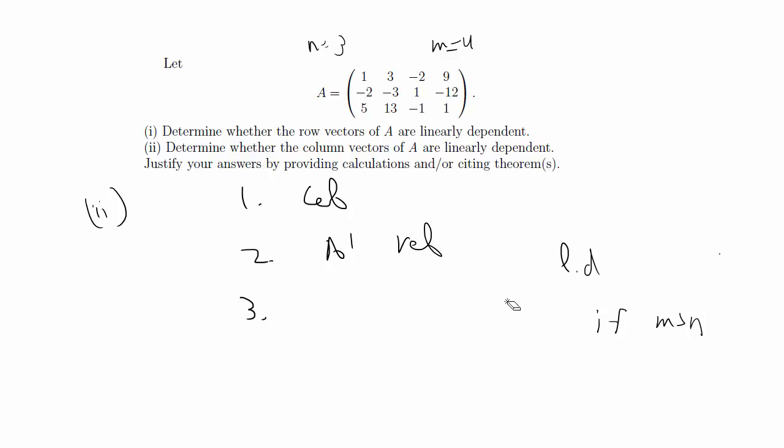So you can just use that theorem to say that in this case, they are linearly dependent, the columns, because there are more columns than rows. And that pretty much sums up the method for determining whether rows or column vectors are linearly dependent.